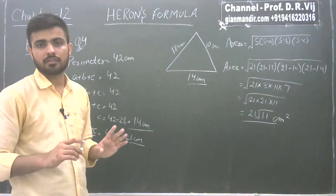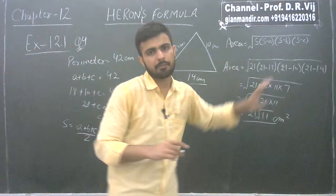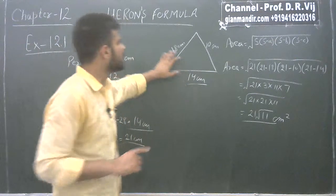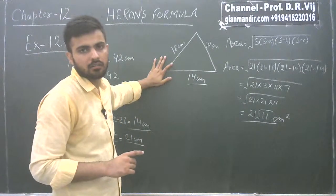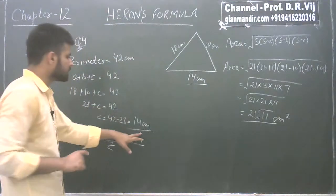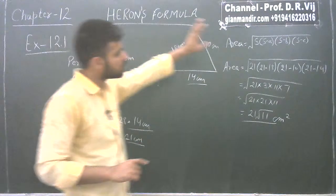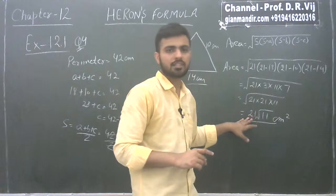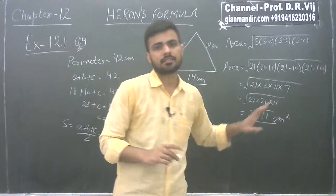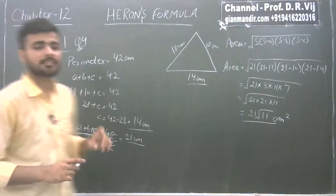Very easy question. The trick here was that the perimeter and two sides were given, so first we found the third side which is 14 centimeter. Then we put all values in the formula and the area came out to be 21√11 centimeter square. This was question number 4 of exercise 12.1.